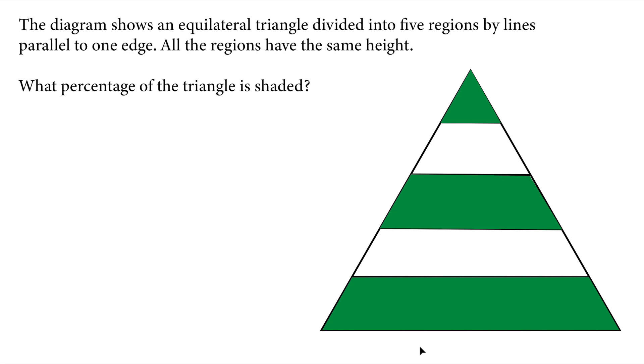The diagram shows an equilateral triangle divided into five regions by parallel lines to one edge. All the regions have the same height. What percentage of the triangle is shaded? So how do you find the percentage? We need to divide.